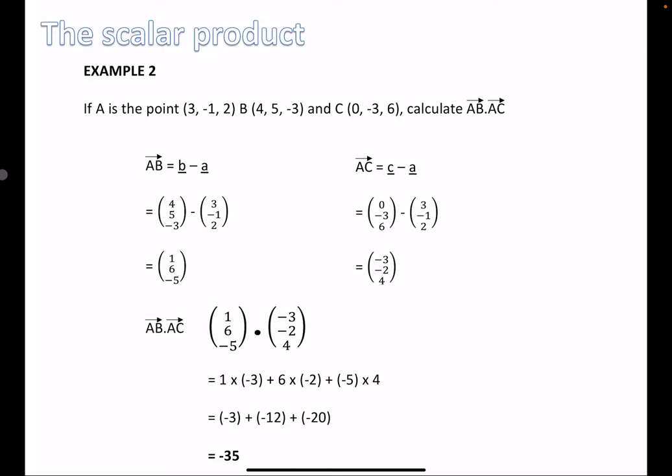If A, B, and C are given as coordinates and we want to find AB·AC, we first need to find the vectors AB and AC — we've done that numerous times. AB = B - A, and AC = C - A. Make sure you get your coordinates in the right place and write them as position vectors, then pop them into the formula. It's going to be (1×-3) + (6×-2) + (-5×4). Be careful with your negatives — adding them all together gives -35.